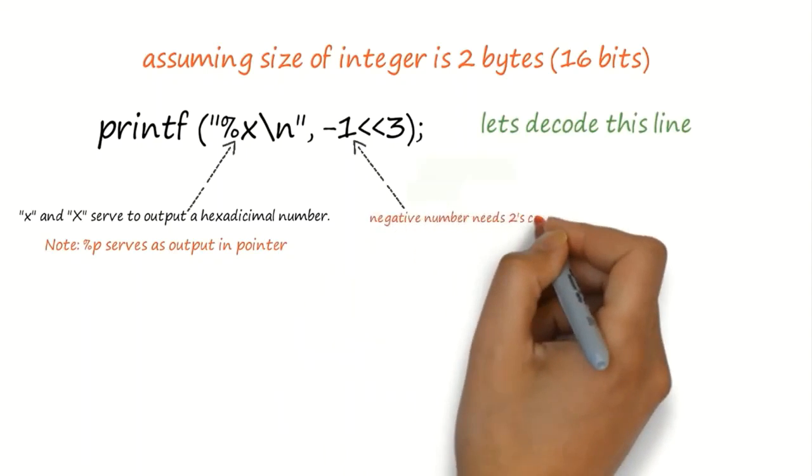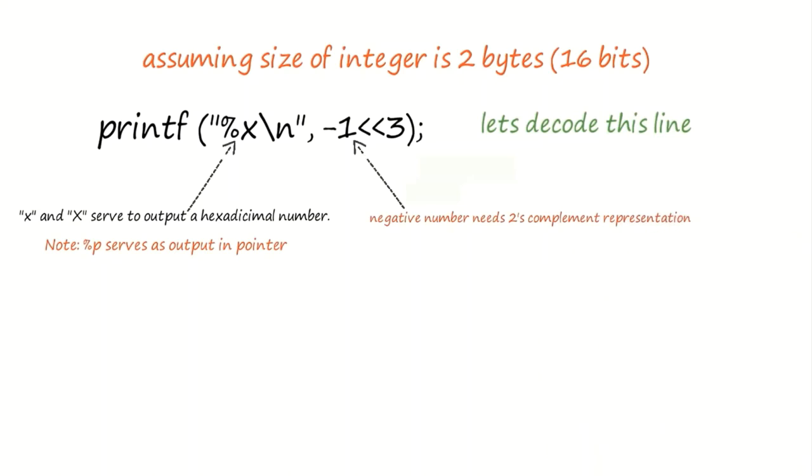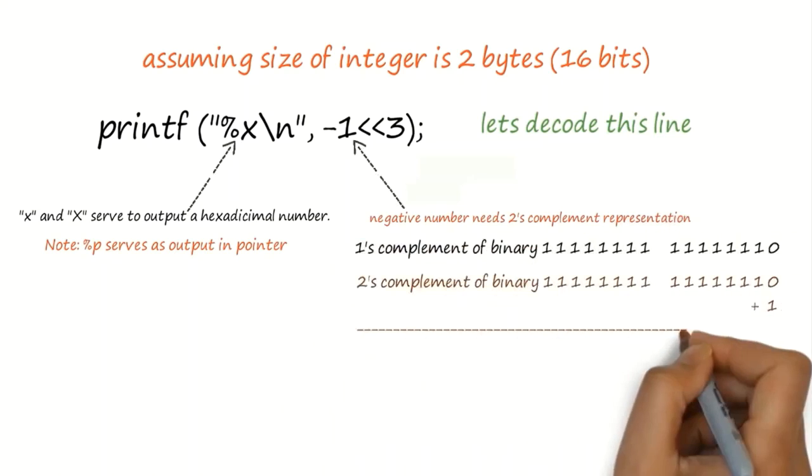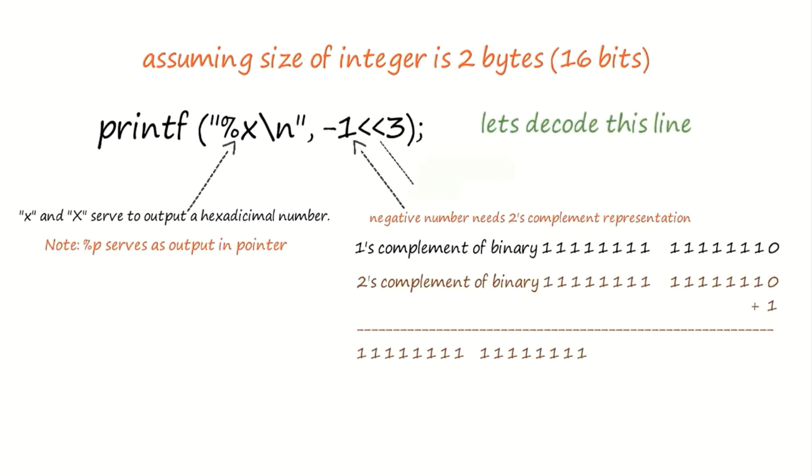Minus 1 needs 2's complement representation as negative numbers will always be represented by 2's complement. And this sign denotes left shift and 3 indicates left shift by 3 bits.